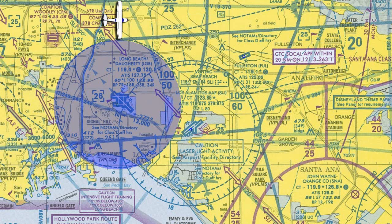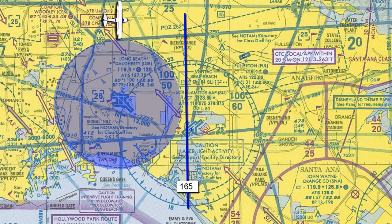If we look at the Long Beach airspace, we'll see that we'll have to fly almost straight south to the Seal Beach VOR if we want to stay out of the Long Beach airspace. If we run a straight line from the Seal Beach VOR so we miss the Long Beach airspace, we'll see that we'll need to fly a heading of 165 to the Seal Beach VOR.